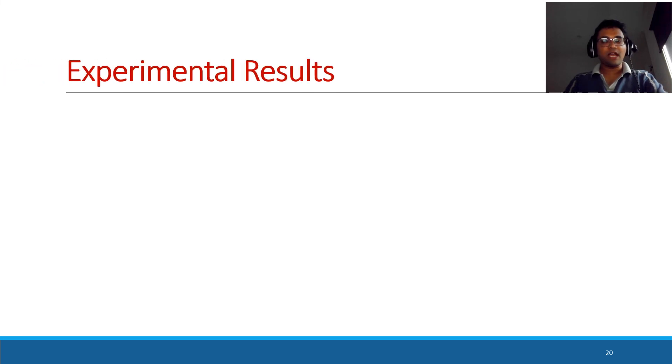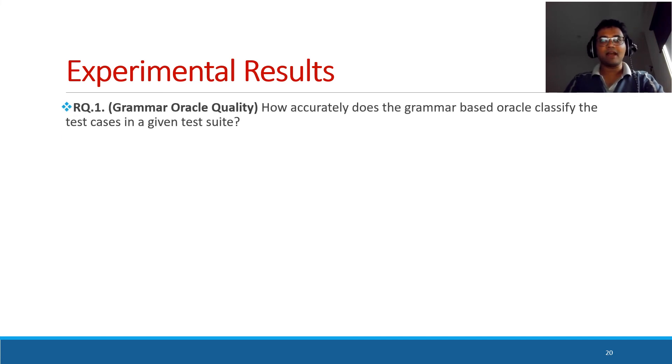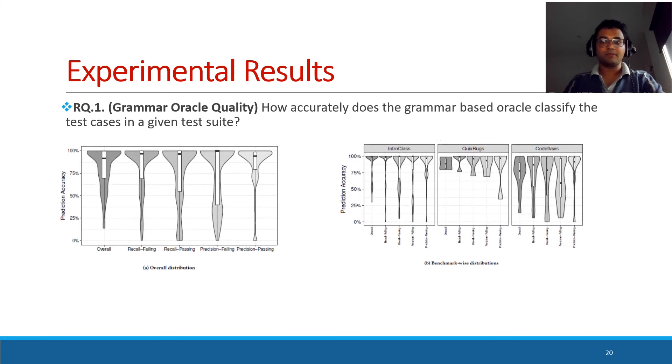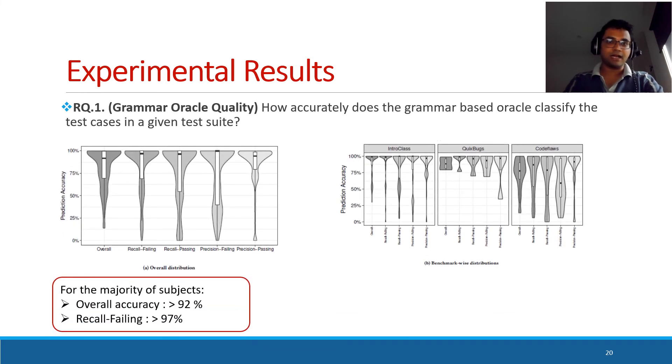Now I would like to present the results of our experiments. We conducted these experiments based on four research questions. Under research question 1, we assessed the grammar quality or how accurately this grammar predicts the test cases. These are the box plots of our experiments. I would like to summarize the results. For the majority of subjects, the overall accuracy is above 92%, and recall for failing inputs, even though we begin with a single failing input, is above 97%.